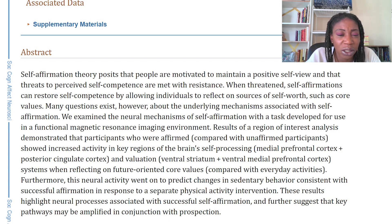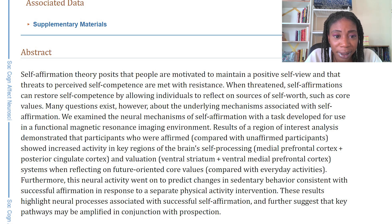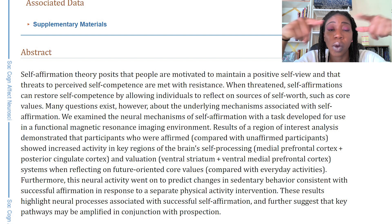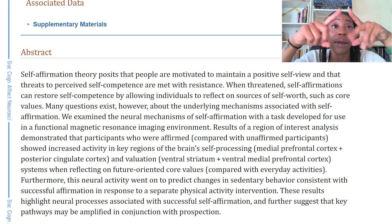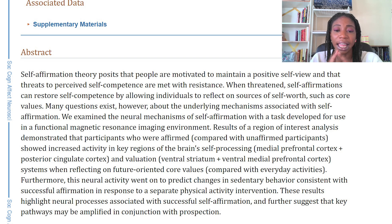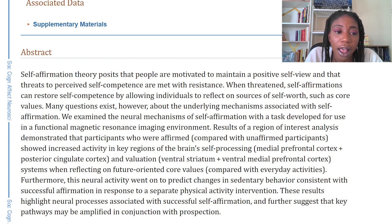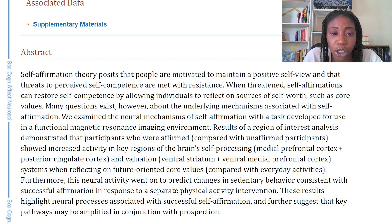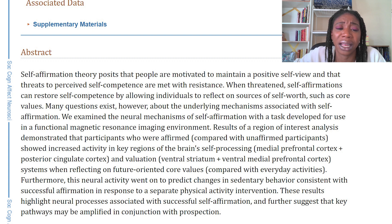The last sentence: results highlight neural processes associated with successful self-affirmation — those brain regions and what those brain functions are doing — specifically those associated with successful self-affirmations. They further suggest that key pathways may be amplified in conjunction with prospection. I don't know what the word "prospection" means. I'm thinking this is probably related to that future orientation idea, but I'm not sure — so I'll be looking further into the article to understand what prospection means.